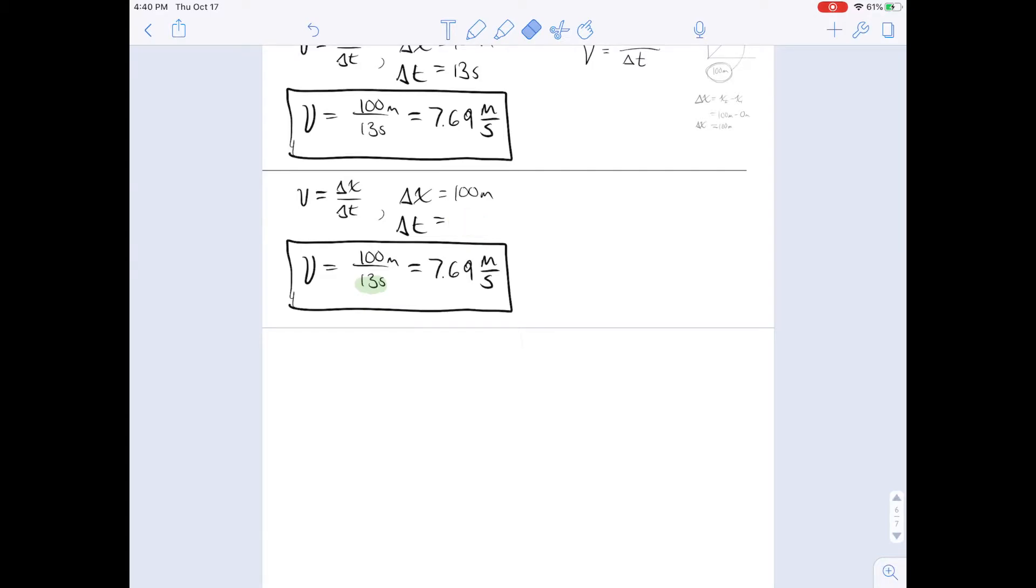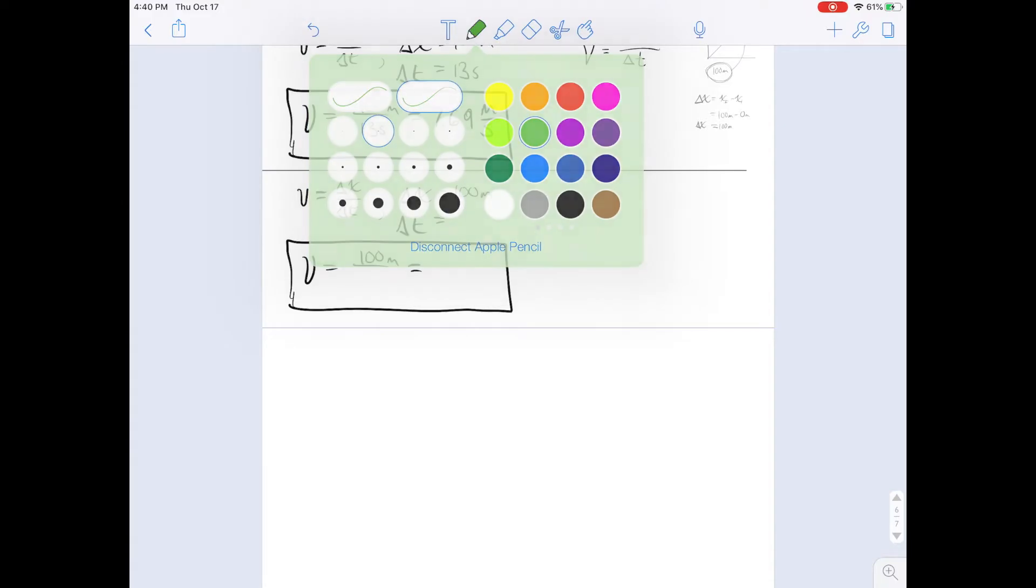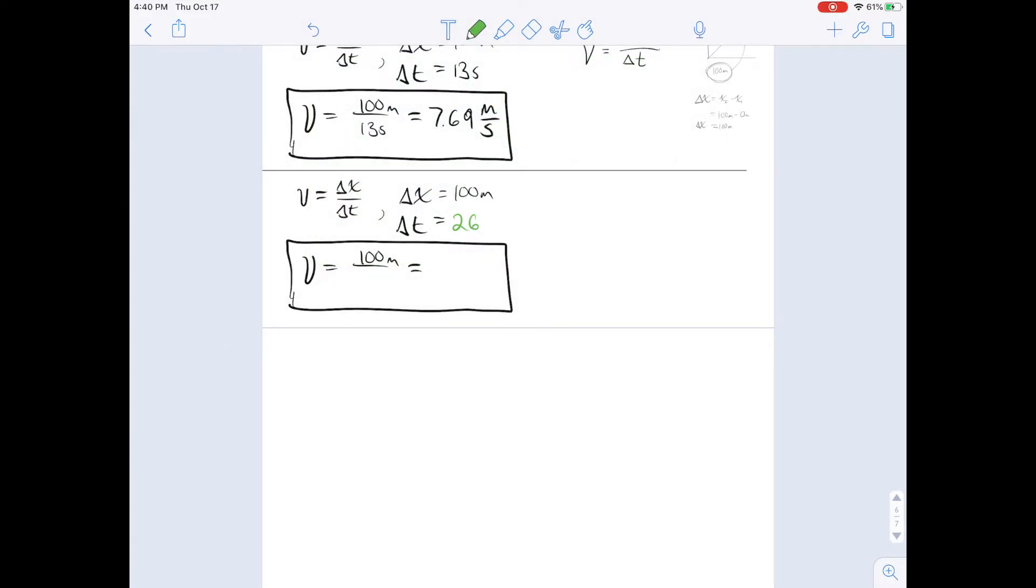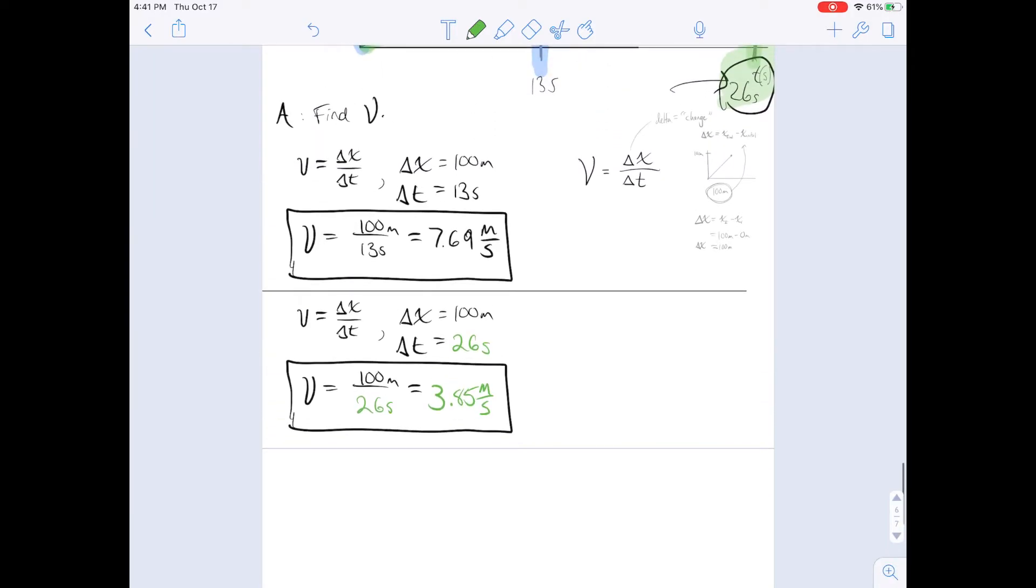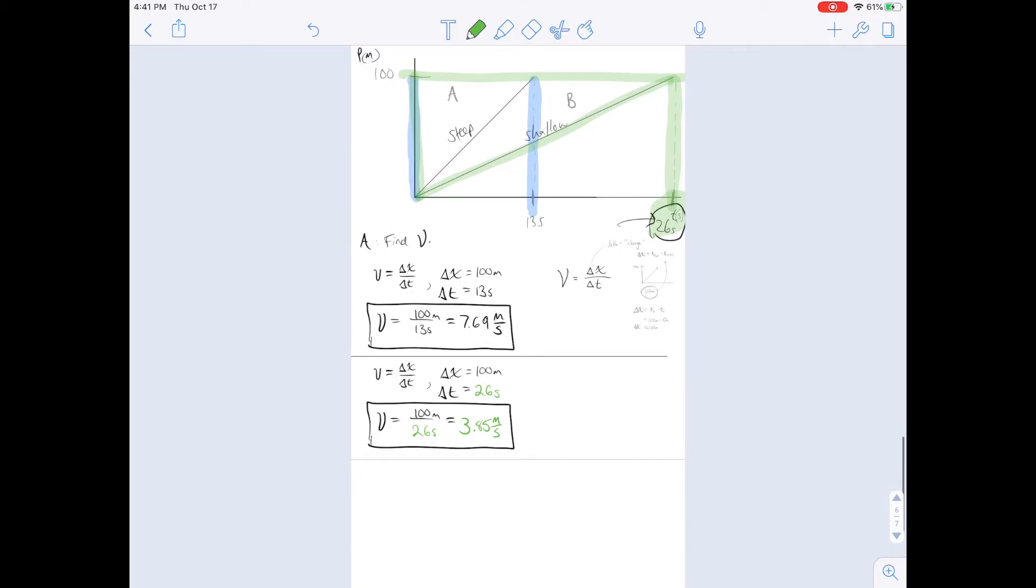So we can erase that, and we just changed our time. 26 seconds, and then now we get 100 divided by 26, which instead is 3.85 rounded meters per second. And this serves as a numerical confirmation of what we said in the last video.